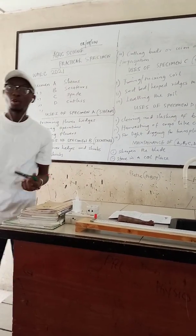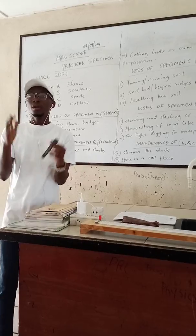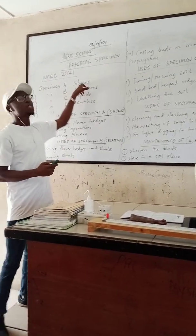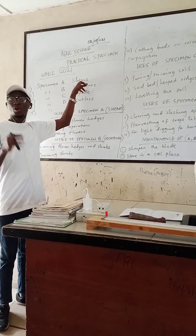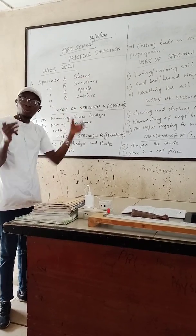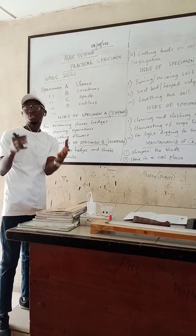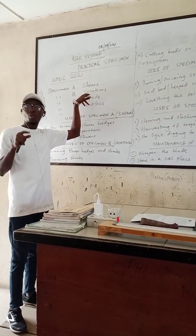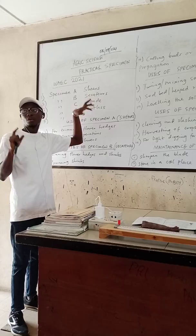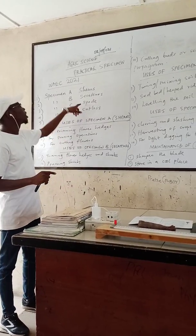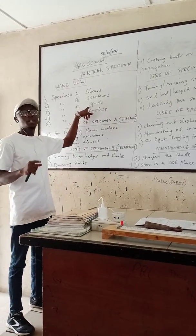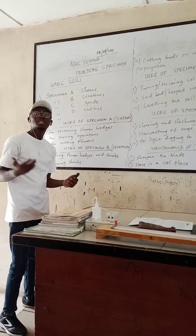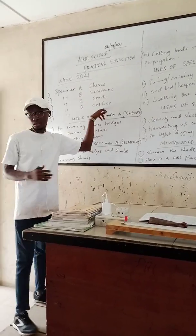The questions that might come out include: number one, identification of the specimen. You explain what shears is, how the tool looks, and what it is used to do. Then you explain the secateurs — what farm implement it is and what it is used for. You explain the spade, what farm instrument it is and what it can be used for, and likewise the cutlass.